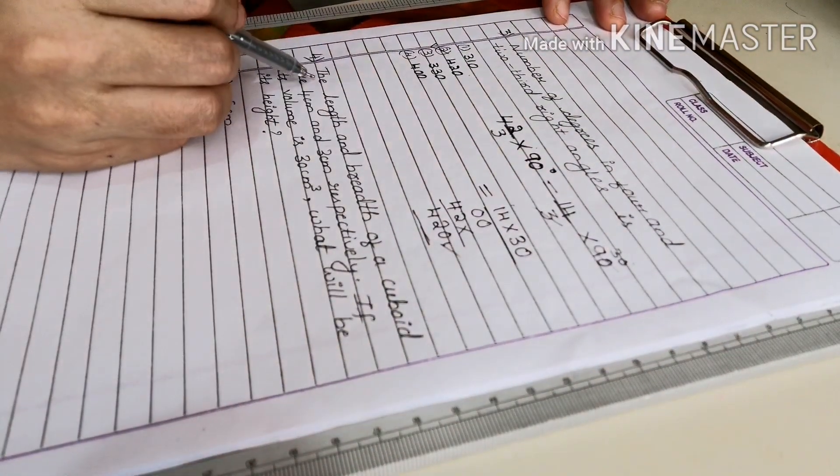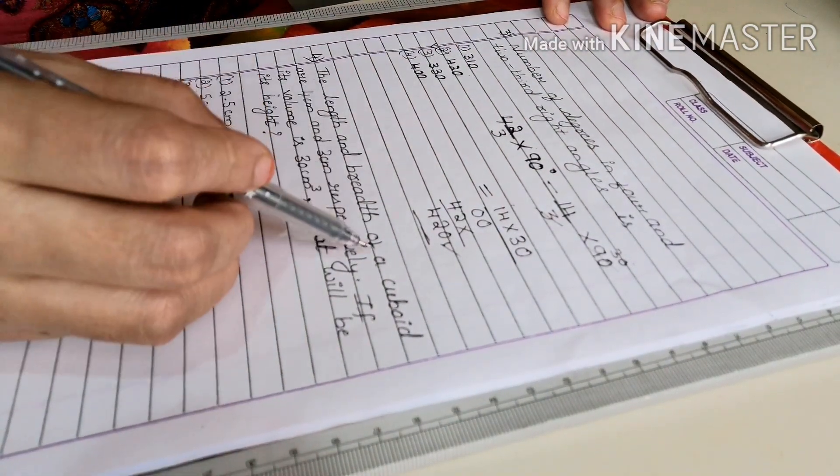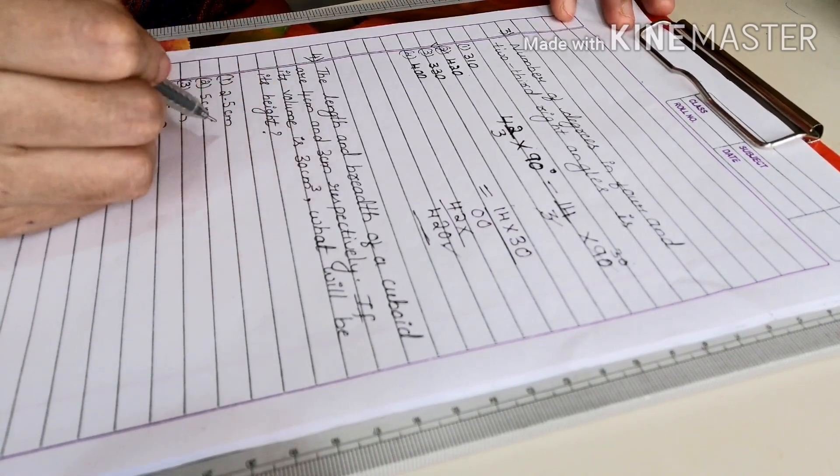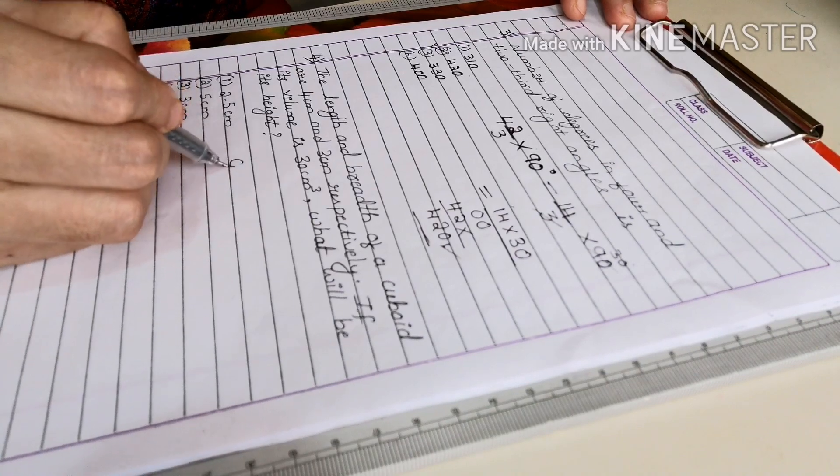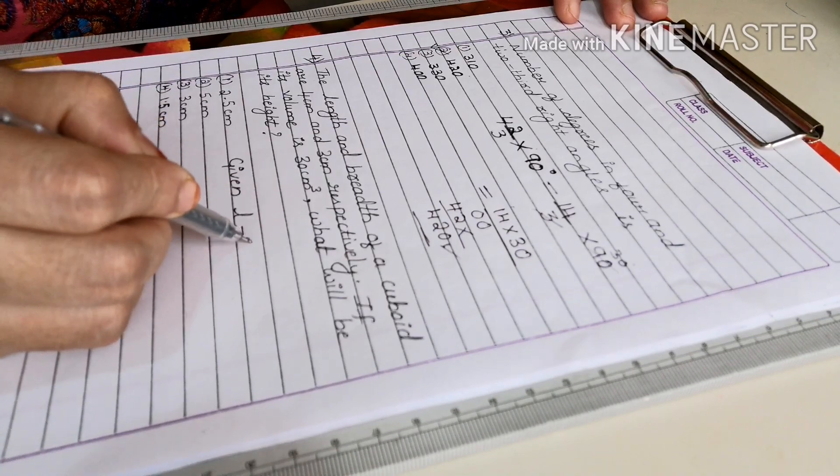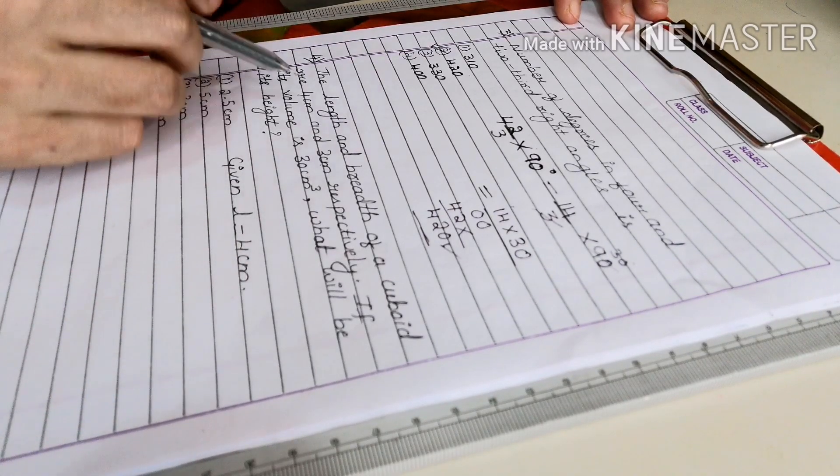Next question. The length and breadth of a cuboid are 4 cm and 3 cm. First we have to write what is given. Given length of a cuboid L is equal to 4 cm and breadth is 3 cm respectively. If its volume is 30 cm cube, volume 30 cm cube, what will be its height? Height is equal to question mark.